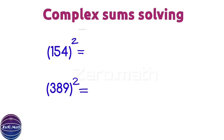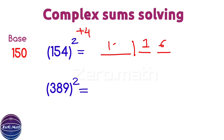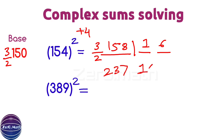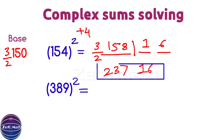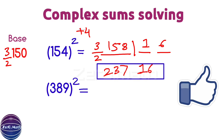Let's complicate further — figure out the square of 154. Here we take base 150. 154 is 150 plus 4. The second part is the square of 4, which is 16. The first part is 154 plus 4 equals 158. Now, 150 is 3/2 times base 100, so we multiply 158 by 3/2 to get 237. Our answer is 23716.